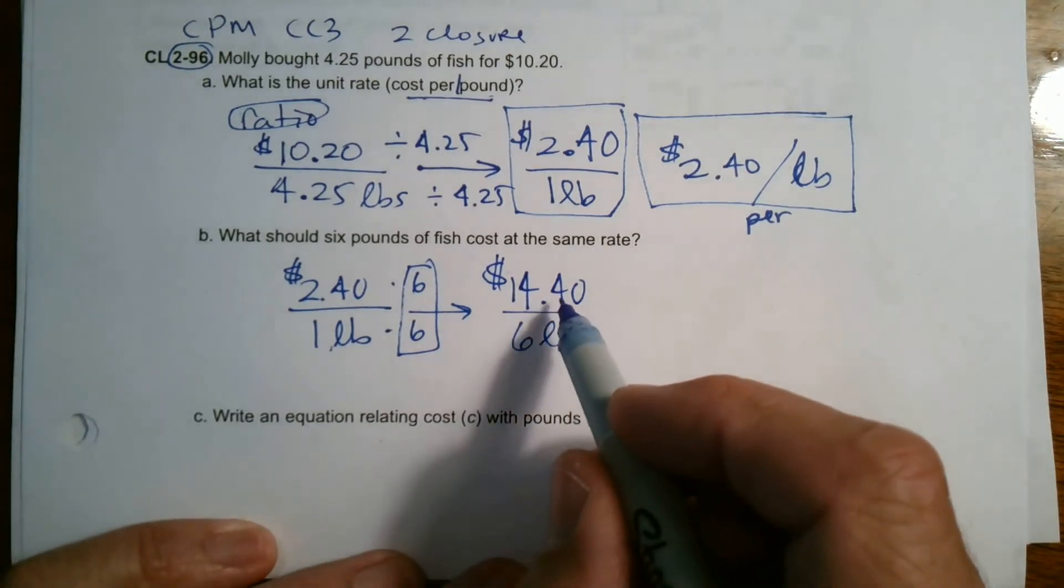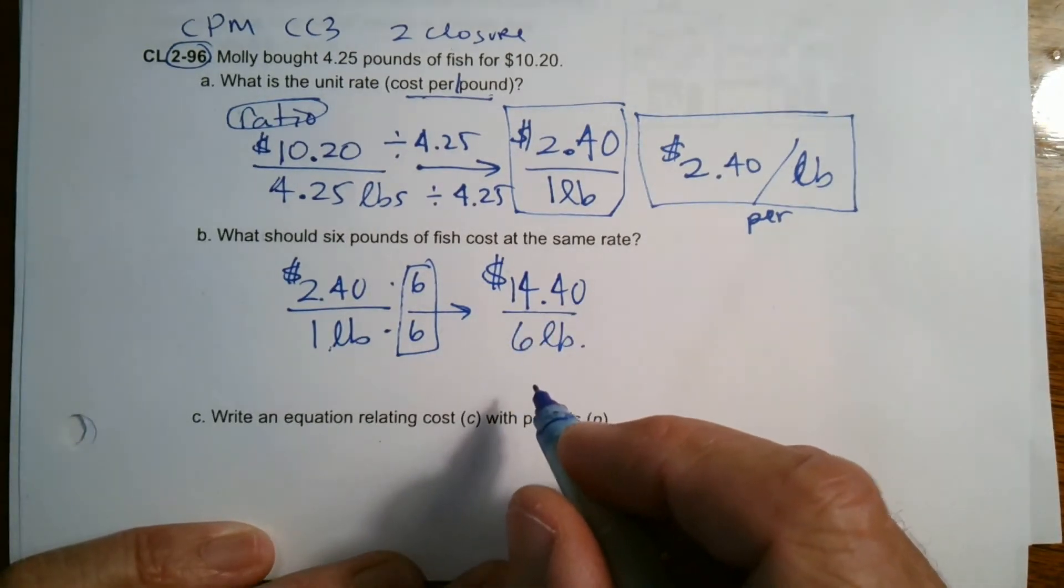And we get $14.40. Okay. So it's $14.40 for six pounds. All right.